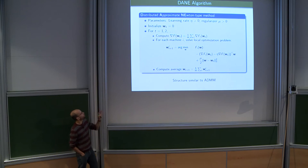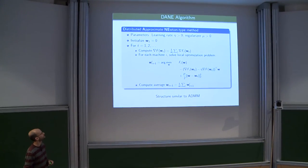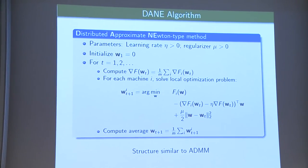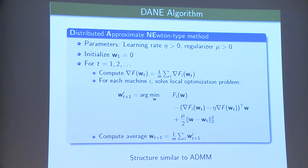The algorithm discussed is called DANE — Distributed Approximate Newton-type Method. For those familiar with ADMM, the structure is very similar. It's an iterative algorithm where each machine solves some local optimization problem, and then the machines communicate average gradients and average solutions to each other.